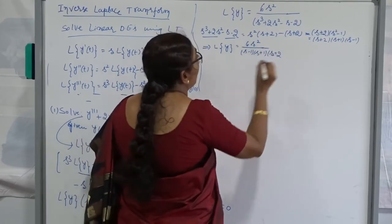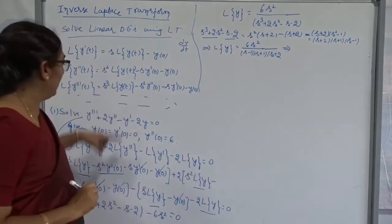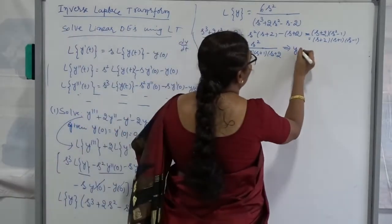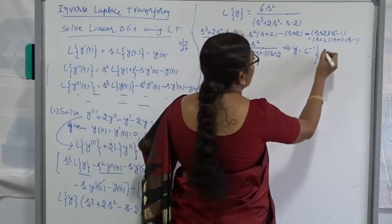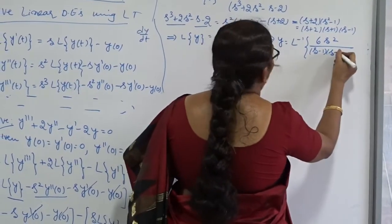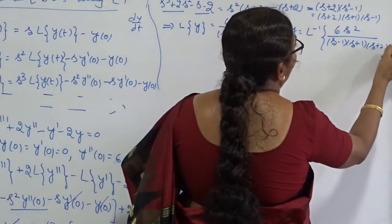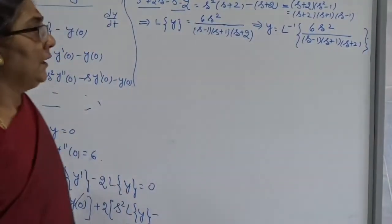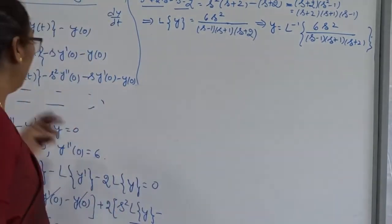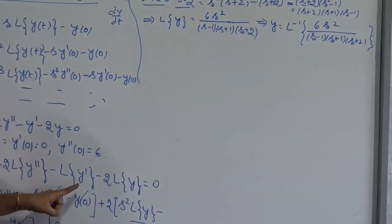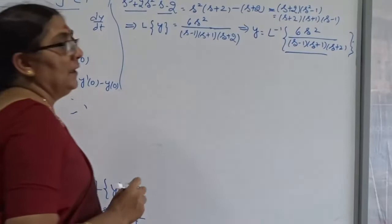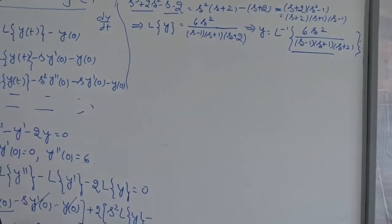This implies the Laplace transform of y is 6S squared divided by (S minus 1)(S plus 1)(S plus 2). Since solving a differential equation means finding y in terms of T, we take the inverse Laplace transform: y equals L inverse of 6S squared divided by (S minus 1)(S plus 1)(S plus 2). You already know this part from my previous videos — first apply Laplace, then apply inverse Laplace.